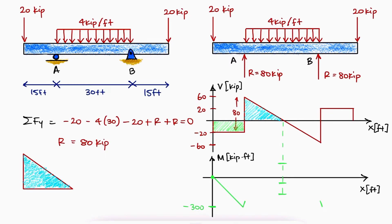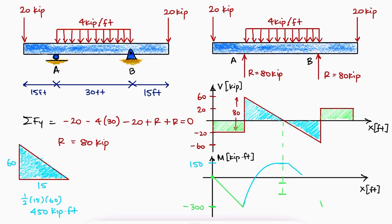Since the area under the curve for the triangular section is 450, it means that the value for the moment at the center of the beam is minus 300 plus 450. And since the remaining areas are the same, we know that the rest of the moment diagram is also symmetric.